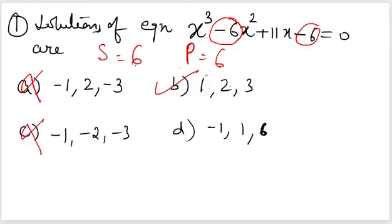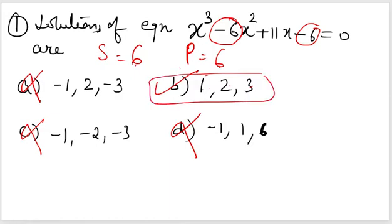Cross-checking the other options: one gives sum minus 6 — not correct. Another gives sum 6 but product comes out negative — not correct either. So there is only one valid option. If these two relations are not enough, you can also use the pairwise product sum as a third check.